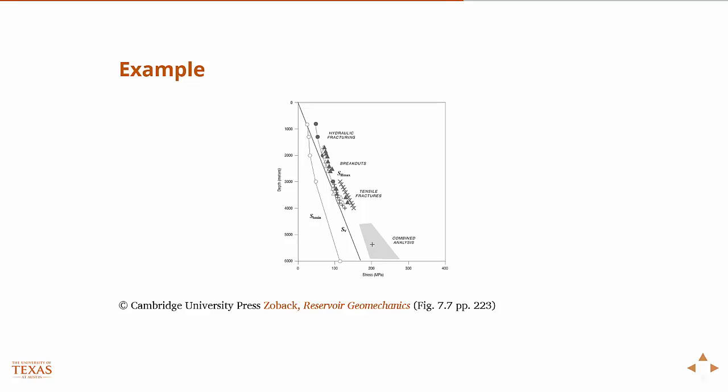But if you use this model, then you can build up these kind of data. So, I mean, this is just, and I'm actually having to jump around a lot because I don't really like the way that it's presented in Zovac's book. So basically, what we were talking about up to two slides ago was in Chapter 6. And now we're into Chapter 7 here, where we're using breakout data and SH-Min from hydraulic fracturing to infer what SH-Max is. And so this chart, this graph comes from Chapter 7.